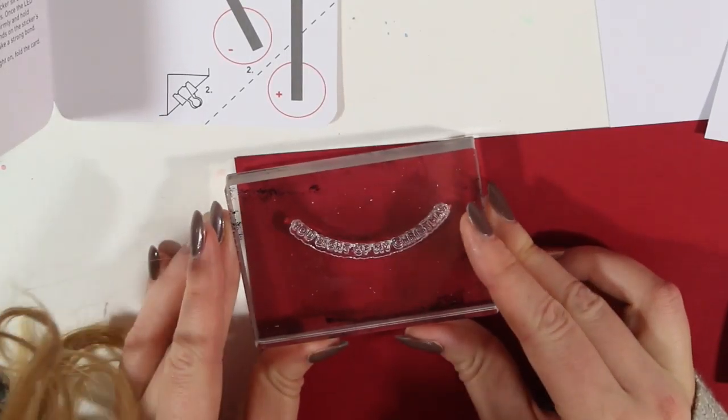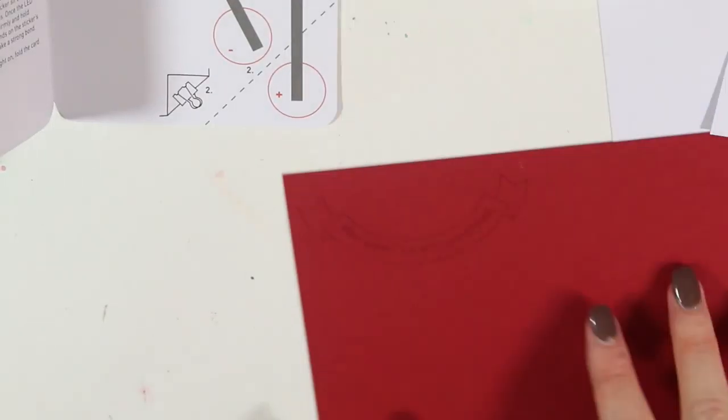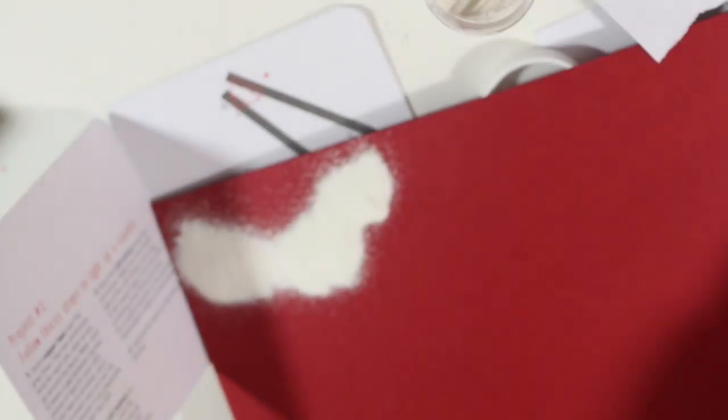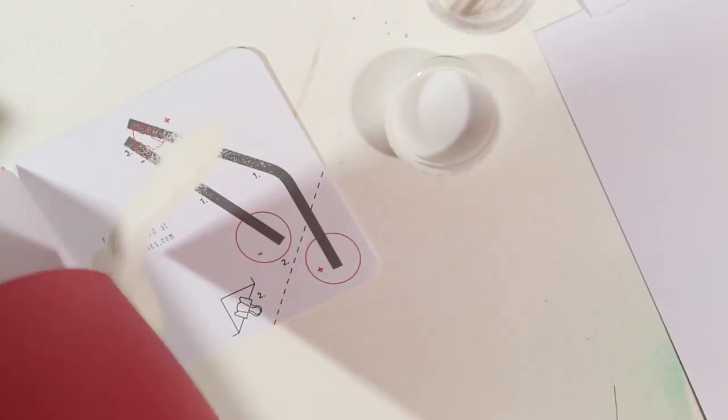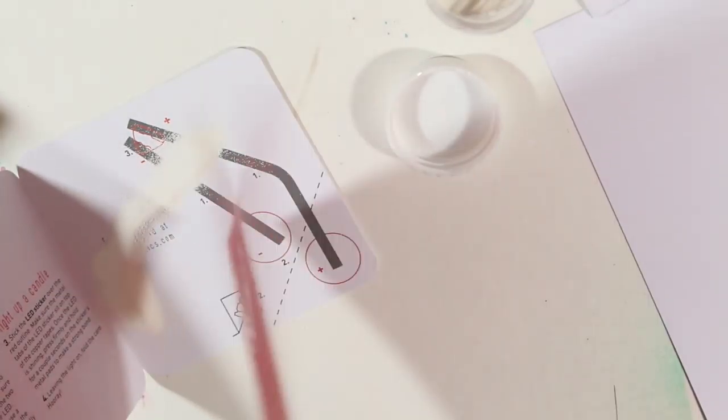And then I'm going to also use a sentiment that says you light up my Christmas. And then I'm going to take some Zig embossing powder in white and just pour that all over it. And then I'm going to heat emboss it.